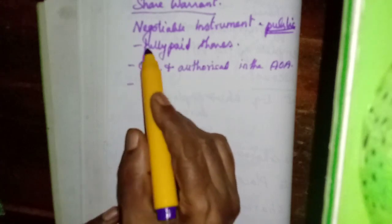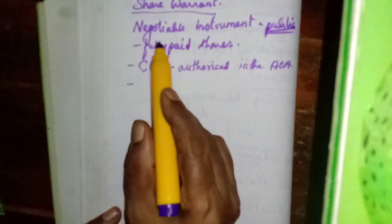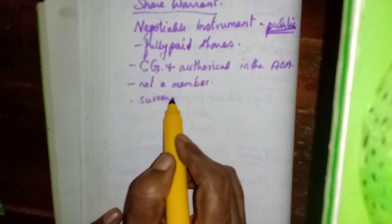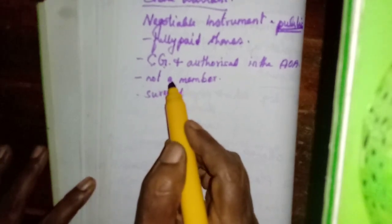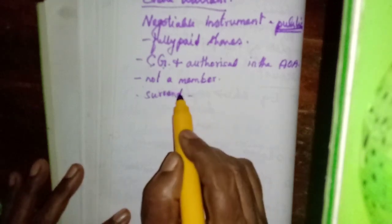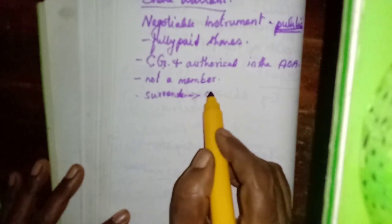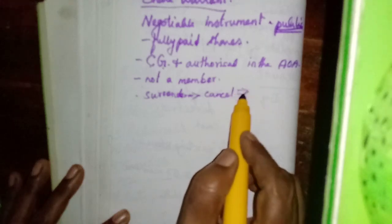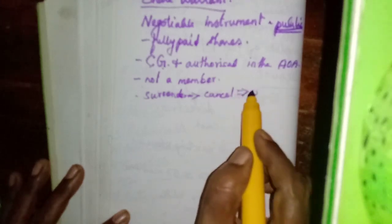The holder of the share certificate is called a member. But the holder of a share warrant is not a member. If he wants to become a member, he can surrender his share warrant and apply for the issue of a share certificate. The company will cancel the share warrant and issue a share certificate instead.